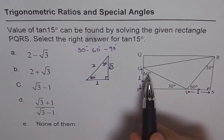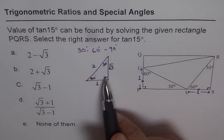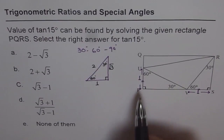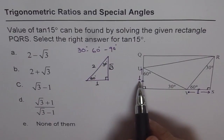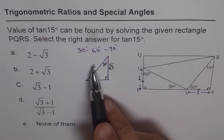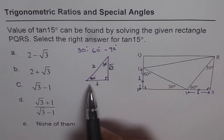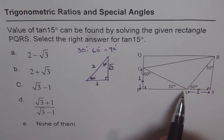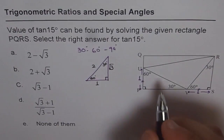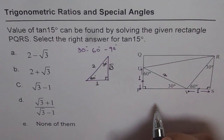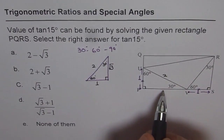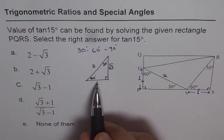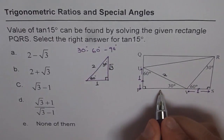Since we have 30-60-90 triangles here, we can use similar triangles to find the sides given one of the sides. Now if one side is 1 unit, then the hypotenuse is twice that. The adjacent side at 60 degrees is 1 unit, so the hypotenuse should be 2 units. And the other side, which is opposite to 60 degrees, is square root of 3 times the adjacent side, so we get square root of 3 here.